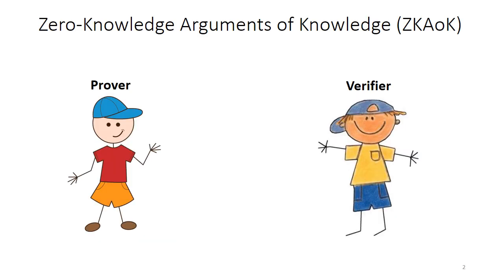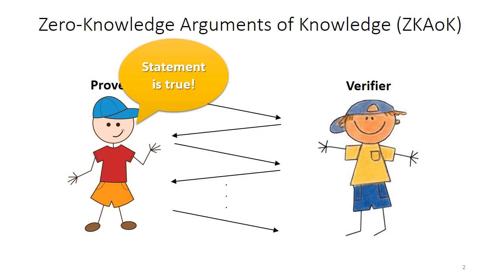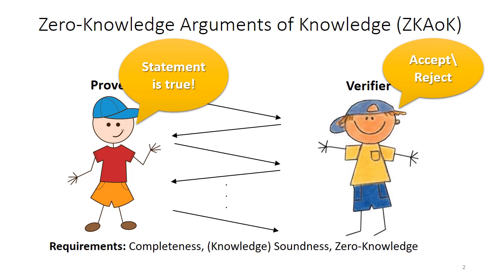First, let us recap what a zero-knowledge argument of knowledge actually is. We are in a situation where the prover and the verifier both know a certain statement. The prover will try to convince the verifier that the statement is actually true. To do so, the prover and the verifier will exchange a set of messages, at the end of which the verifier decides whether or not to accept that interaction. In order to be a zero-knowledge argument of knowledge, this interaction must have three properties.